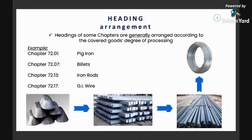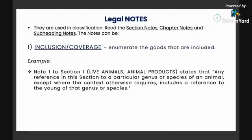Let's define and discuss the legal notes used in classification. There are section notes, chapter notes, heading notes, and subheading notes. The first type is inclusion or coverage — it is defined to enumerate the goods that are included. That's what it means in the tariff.